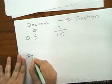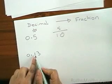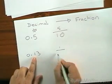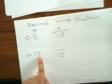Let's look at 0.13. We have the number one in the tenths place, so we know we have one tenth. And we have the number three in the hundredths place.